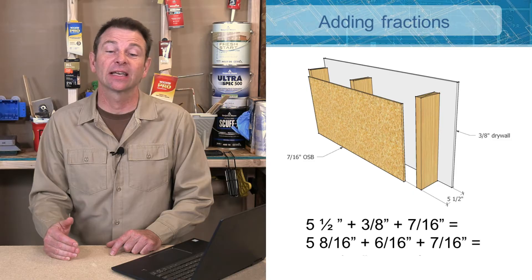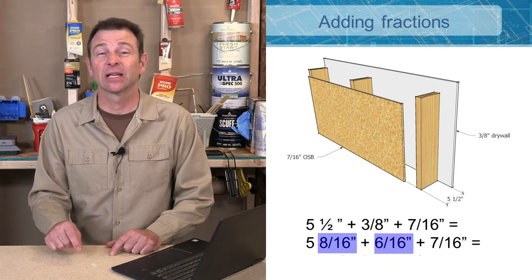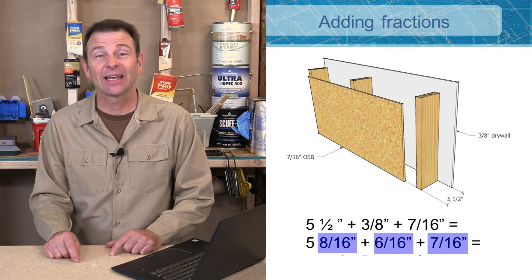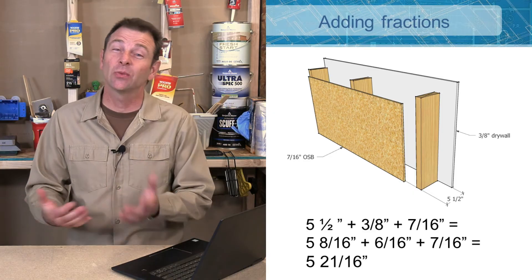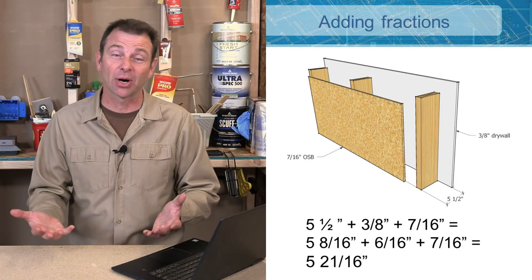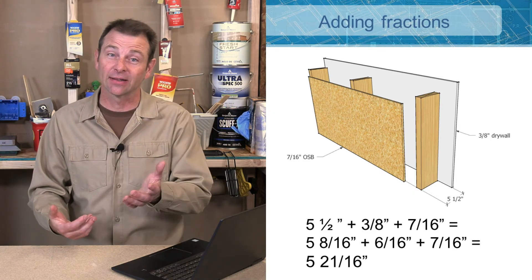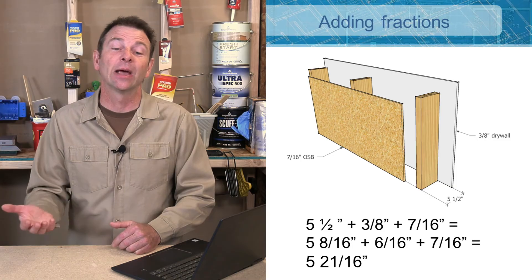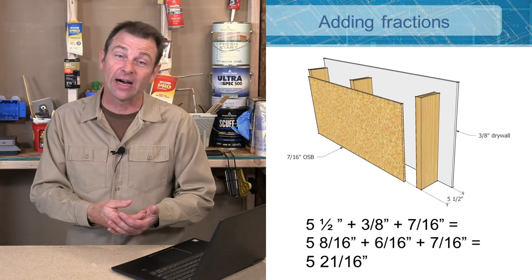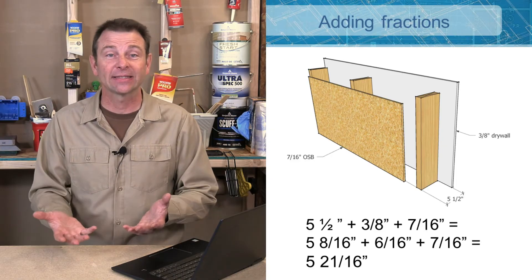We know that we have the 5 inches. Let's add the fractions together: 8/16 plus 6/16 plus 7/16 is a total of 21/16. 21/16 is what we call an improper fraction - that means it's heavy on the top. So we'll remove 16 parts from that and we can carry over to the five, add one to it, that's six, and we have 5/16 left over.